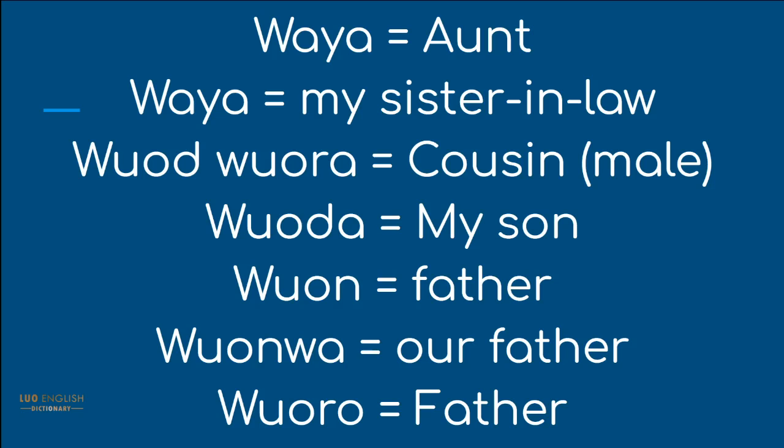Then Woda — my son. Woda. Wona — Wona is father. Wona becomes 'Wona wa,' meaning our father. Then Woro — Woro is also father. Woro.